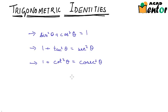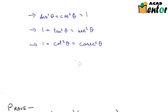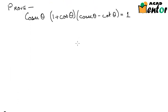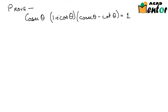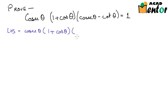Let's look at a few examples related to these identities. The first example says: prove that cosec θ × (1 + cos θ) × (cosec θ - cot θ) = 1. Let's consider the left hand side for now. It is always good to convert ratios other than sin θ and cos θ into sin θ and cos θ, as it simplifies the problem.